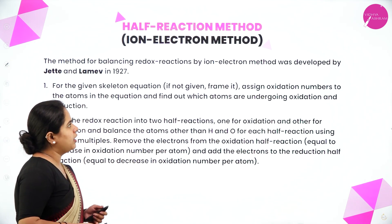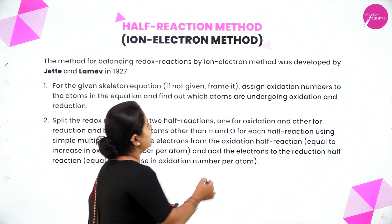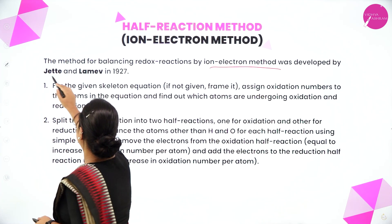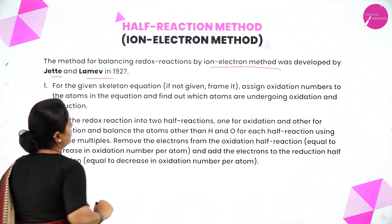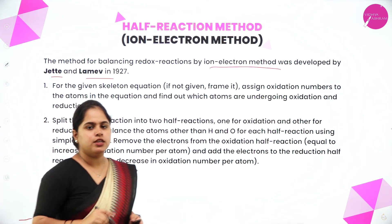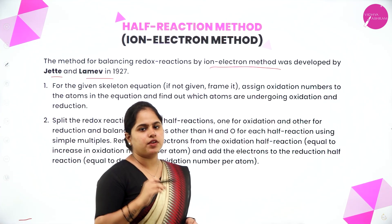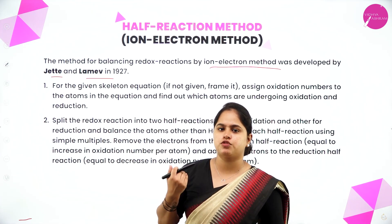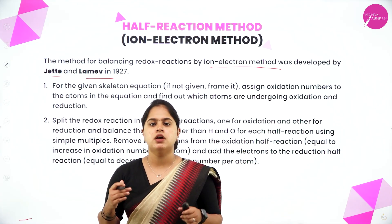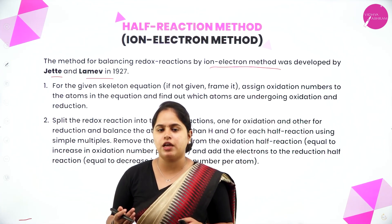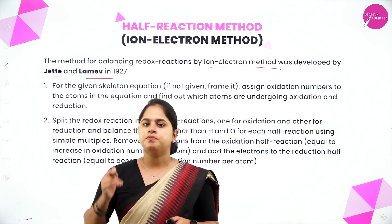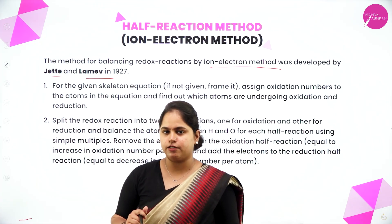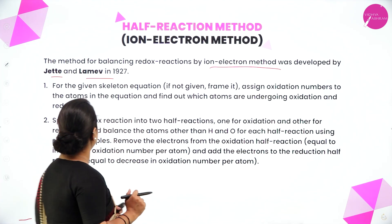The method for balancing redox reactions by the ion electron method was developed by Jette and Lamov in 1927. The steps we have to follow to balance redox reactions are quite similar to what we studied in the oxidation number method.